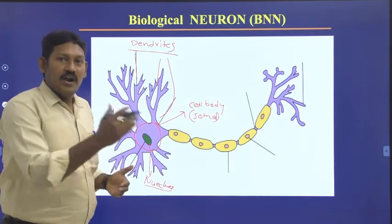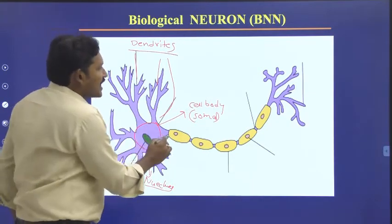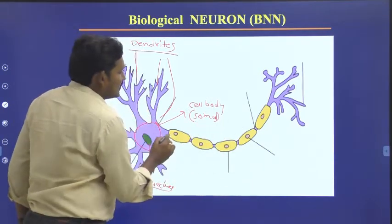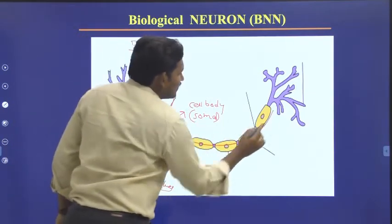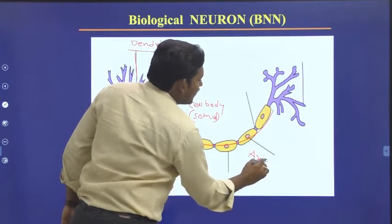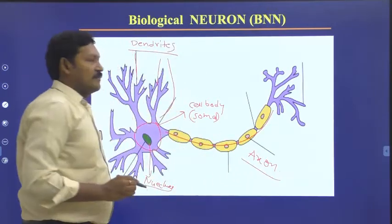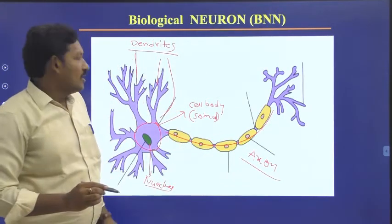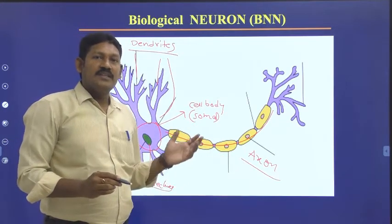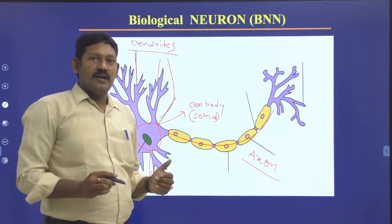The cell body will produce an output, and that output will be transferred with the help of axons. This is the axon. The axon is useful for carrying the output signals.